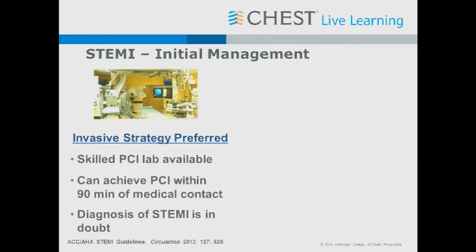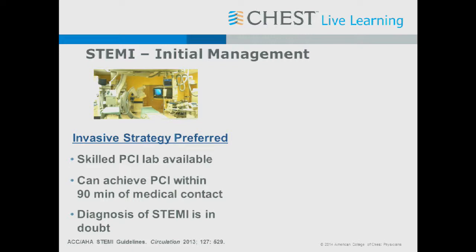The initial management heavily favors an invasive strategy when a skilled PCI lab can achieve PCI within 90 minutes of first medical contact. When the diagnosis of STEMI is in doubt — for example, you're unsure how old a left bundle branch block is — that may favor angiography. Fibrinolysis is acceptable in a non-PCI-capable hospital with anticipated transfer delay and no contraindications, and the door-to-needle time should be less than 30 minutes.